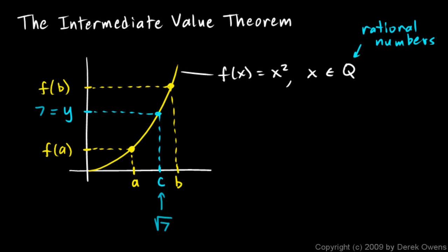The intermediate value theorem depends on the completeness of the real numbers. The same would be true if instead of the rational numbers we had only the irrational numbers. It's the rational numbers and the irrational numbers together that make up a complete set — the real number line — which is complete with no holes and no gaps. If you plot all the rational numbers they'd be infinitely close together but with holes; add the irrational numbers and you get a complete number line. That completeness allows the intermediate value theorem to hold. We have to have a complete domain for our x values.